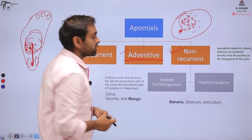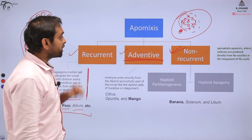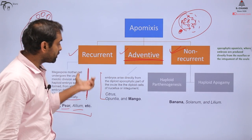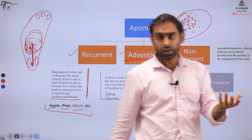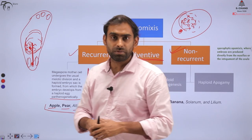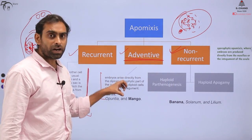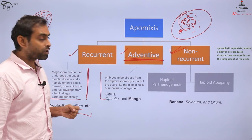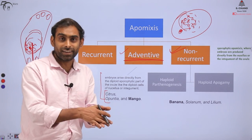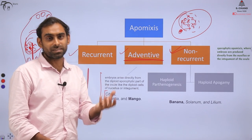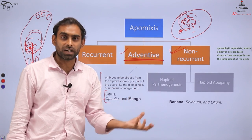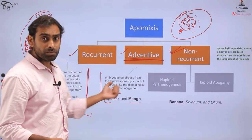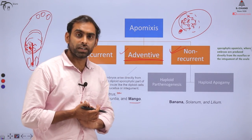The third type is Adventitive Apomyxis. Here embryos arise directly from the diploid sporophytic part — it is more or less like vegetative reproduction, similar to how a plant cutting gives rise to a new plant. The sporophytic part, such as diploid cells of the nucellus or integuments, gives rise to embryos. This can be considered analogous to ectopic pregnancy. It is seen in citrus fruits, Opuntia, and mango.